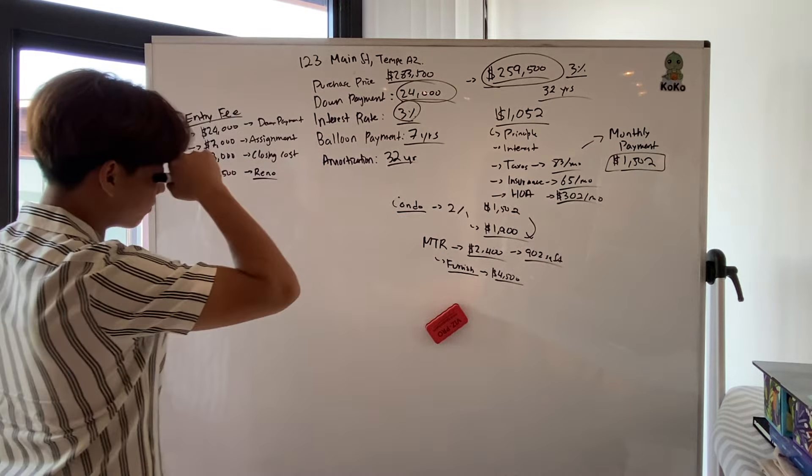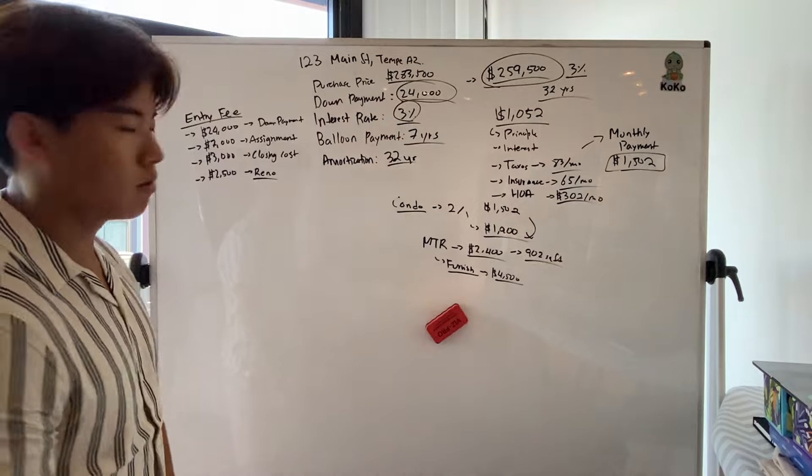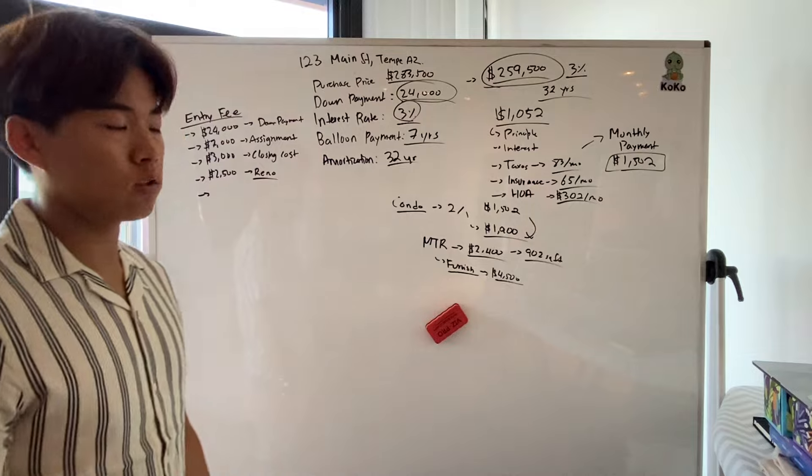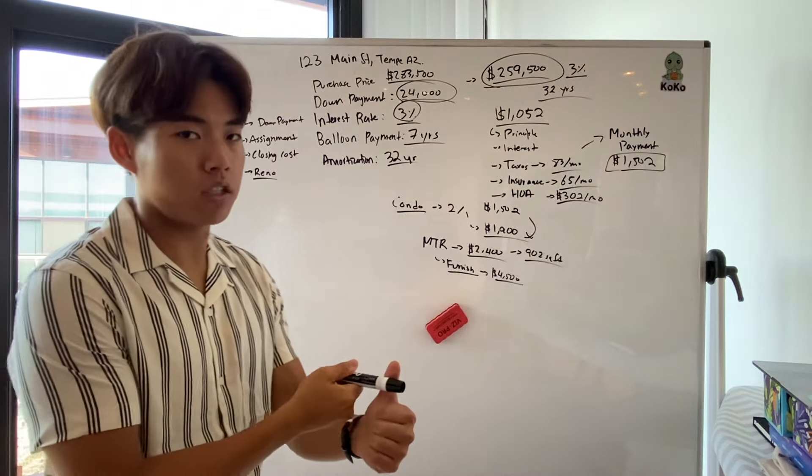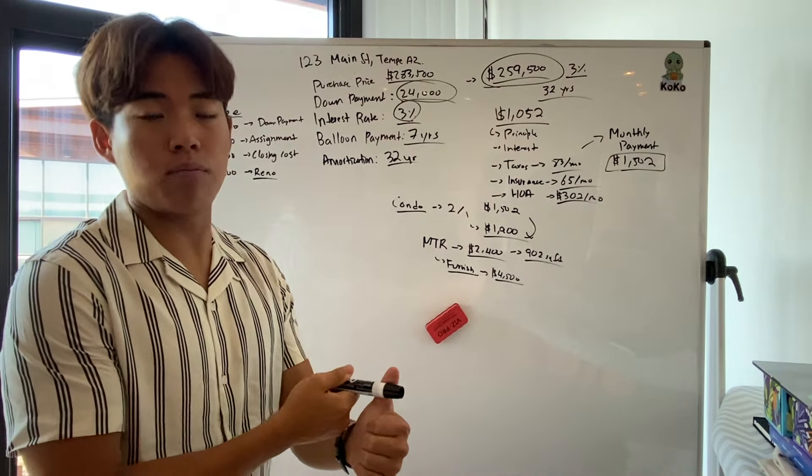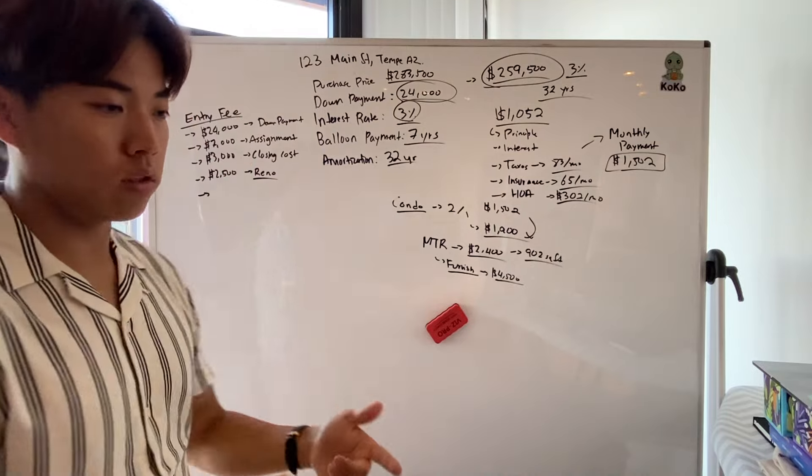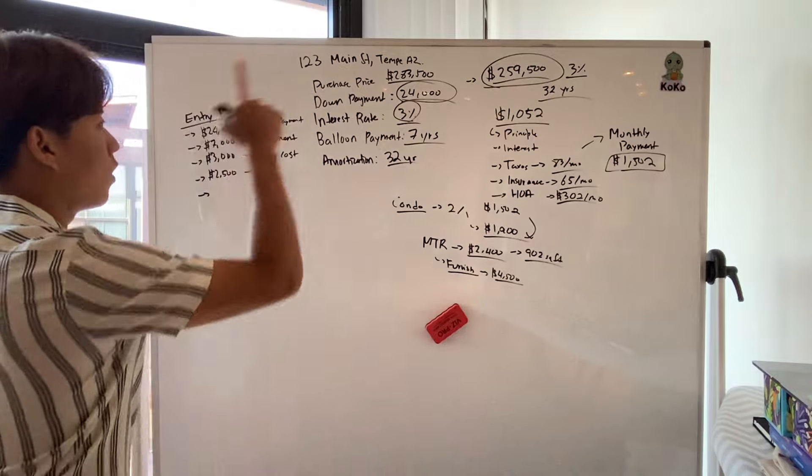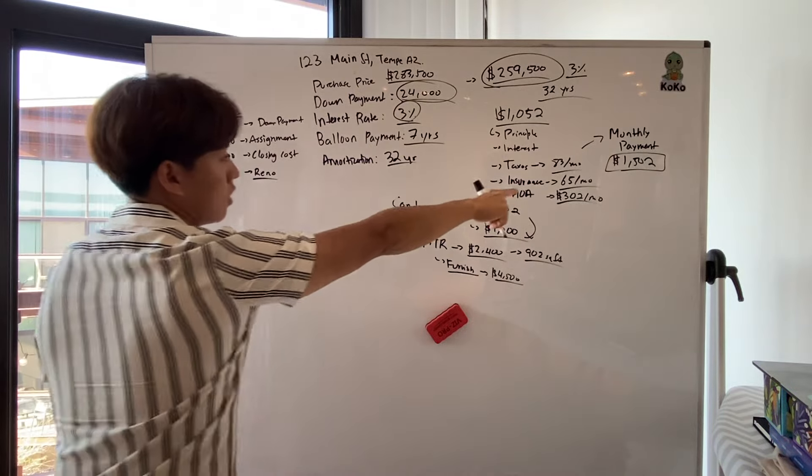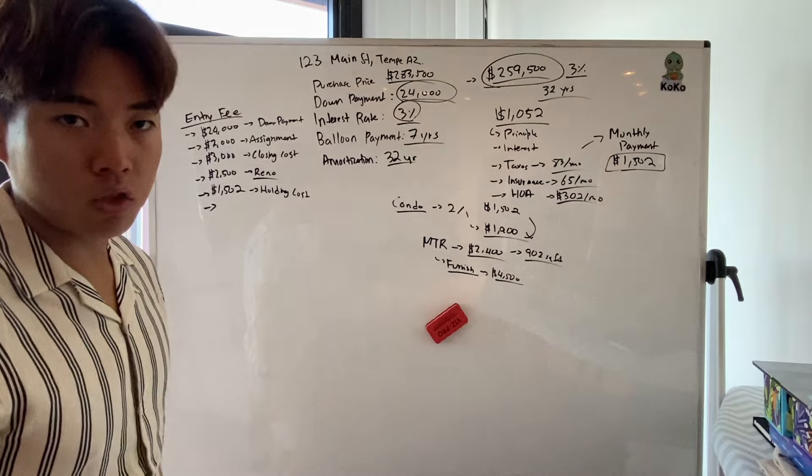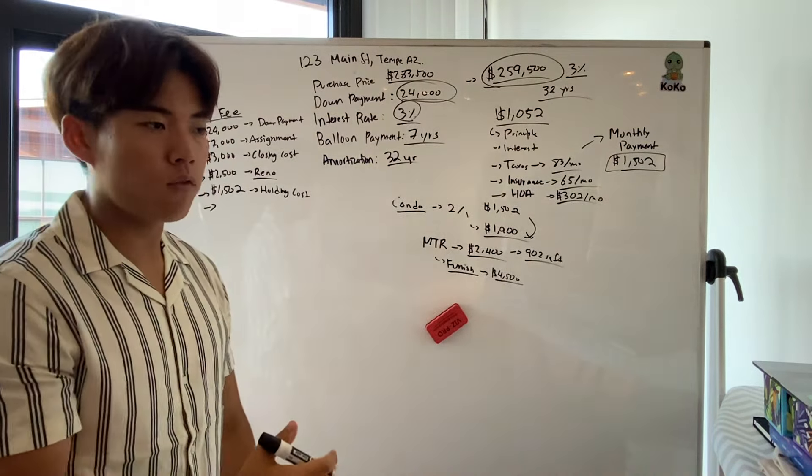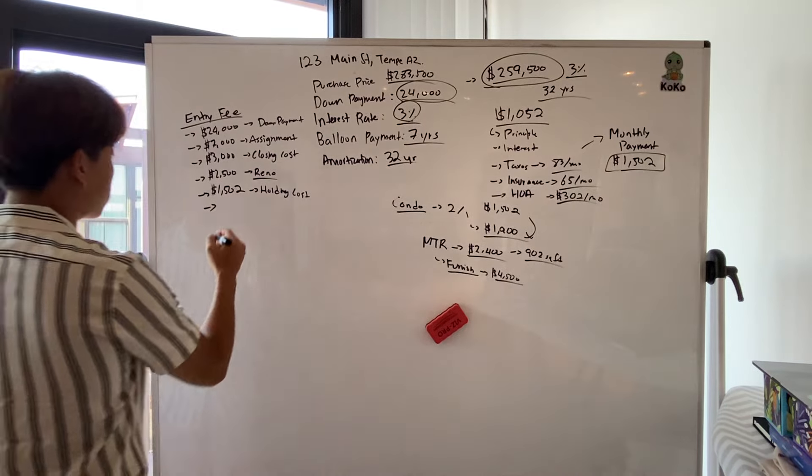And then holding costs will be, I'm just going to say one month because we're not holding the house for more than, I mean, we can furnish the house in about two weeks. I mean, probably even less than that, probably in a week. And then because the renovation is so light, I'm just going to put one month of the holding costs. One month of holding costs, which is $1,502. And obviously there's a cost to market this property. So I'm just going to say $350.